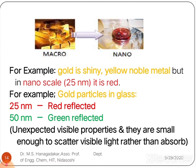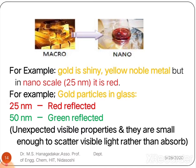In bulk form, nanomaterial gold is yellow in color, but when made to nanoscale, the particles appear red. Gold is a shiny yellow noble metal, but at nanoscale it is red. When gold particles are at 25 nanometer size, they reflect red color when subjected to visible light. This explains the unexpected visible properties observed by absorption of visible light by nanoparticles.